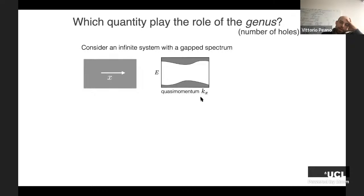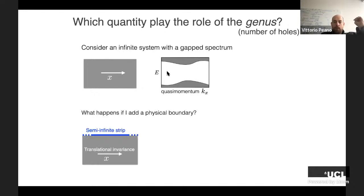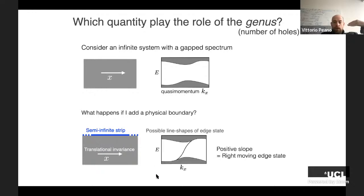For a system with approximate translational invariance, energy levels divide into allowed bands separated by forbidden band gaps. We look for properties invariant under continuous changes to the Hamiltonian without closing a band gap. For a gapped spectrum with at least one translational invariant direction, the band structure can be plotted versus momentum. Adding a physical boundary can yield edge states localized at the boundary, appearing as additional states in the band structure.